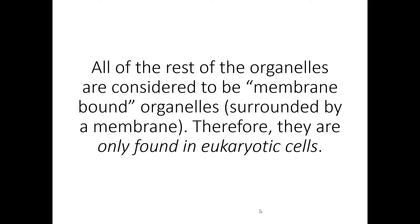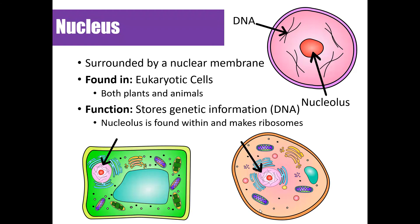The nucleus is surrounded by a nuclear membrane. It contains genetic information — its function is to store that genetic information in the form of DNA and provide instructions for the rest of the cell. The nucleus is found in both plant and animal cells.